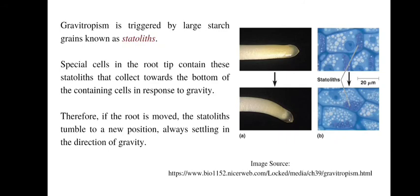In the clinostat setup, the distribution of auxin and the statoliths are maintained in equal amounts all over the plant cells — in the stem cells as well as in the root cap cells — which is why no curvature is observed.